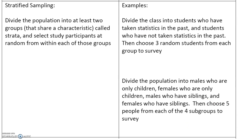Stratified sampling divides a population into at least two groups — this is an important part — that share a same characteristic, called the strata. We then study participants at random from within each of those groups. For example, we can divide a class into students who have taken statistics in the past and students who have not, then choose three random students from each group to survey.